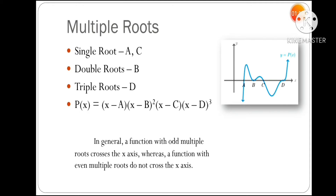In the given figure, point A represents a single root, point B represents a double root, point C represents a single root, and point D represents a triple root. Single root means one root at that point; double root means two roots; triple root means three roots. In the polynomial P(x), (x − A) is a single root, (x − B)² represents a double root — meaning x = B is obtained twice — and similarly x = D is obtained thrice.